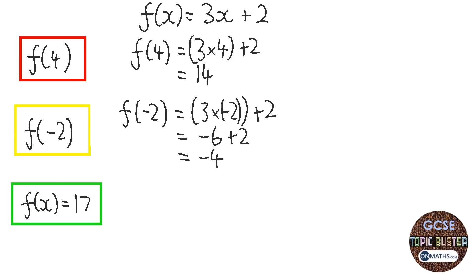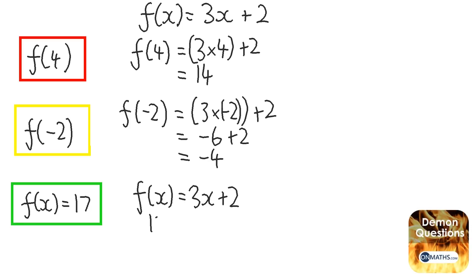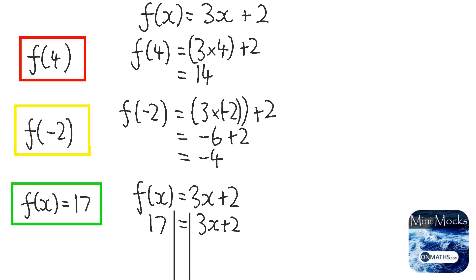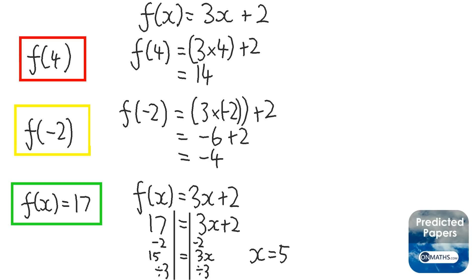This time the function gives us an answer of 17. So we replace f of x with 17 and solve: take away 2 both sides, then divide by 3 both sides, giving x equals 5. We can check: 3 times 5 is 15, plus 2 is 17.